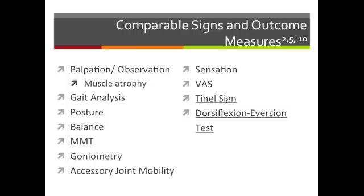To ensure effective physical therapy, comparable signs need to be taken, and these include palpation and observation, checking for muscle atrophy, gait analysis, posture analysis, balance testing, manual muscle testing of the ankle and foot flexors, goniometry measurements, accessory joint mobility, sensation, pain ratings before and after treatment, and outcome measures such as the Tinel's Sign and the Dorsiflexion Eversion Test.